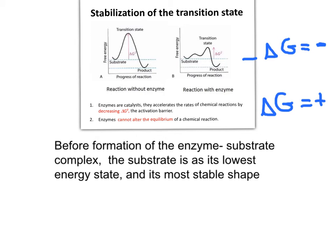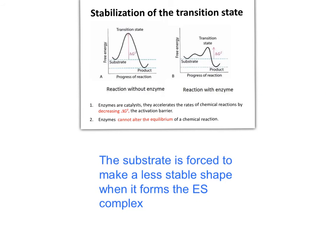An enzyme cannot make an unfavorable reaction become spontaneous. If A becomes B by the action of an enzyme, B cannot become A because the enzyme cannot change the direction of the reaction. When the catalytic groups interact with the substrate, they transform the shape of the substrate,